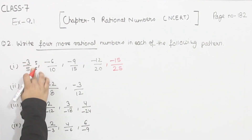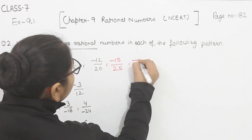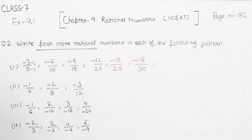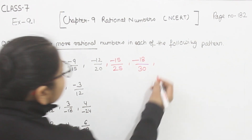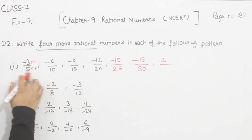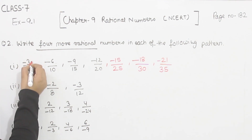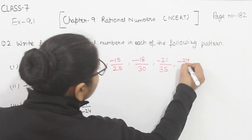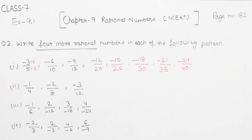We will multiply by 6 — 6 threes are 18 and 6 fives are 30, giving minus 18 by 30. Then multiplying by 7 — 7 threes are 21 and 7 fives are 35, giving minus 21 by 35. Finally, multiplying by 8 — 8 threes are 24 and 5 eights are 40, giving minus 24 by 40. These are the next four rational numbers for part 1.